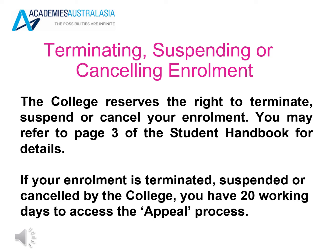The college reserves the right to terminate, suspend or cancel your enrolment. You may refer to the student handbook for details. If your enrolment is terminated, suspended or cancelled by the college, you have 20 working days to access the appeal process.